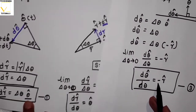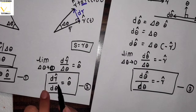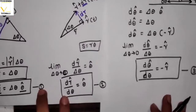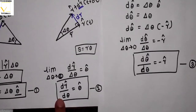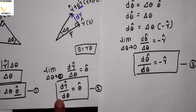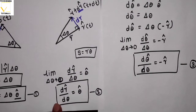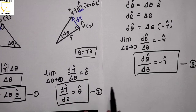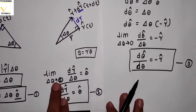We will now use these two equations — dr cap upon d theta equals theta cap, and d theta cap upon d theta equals minus r cap — to find the equations for velocity and acceleration.